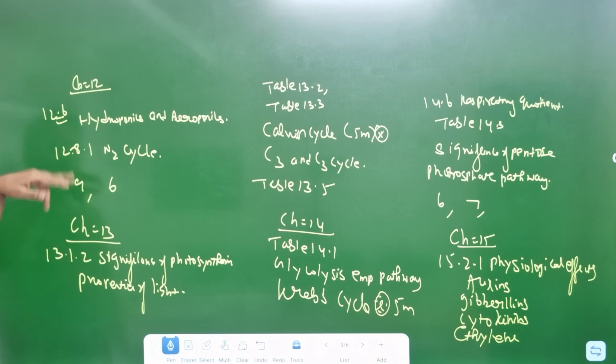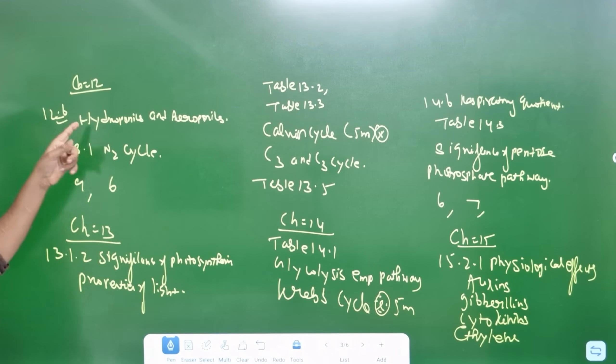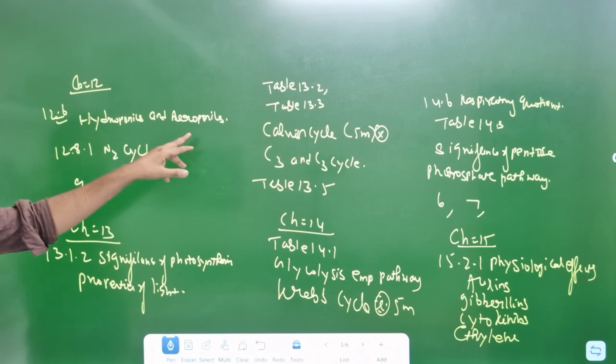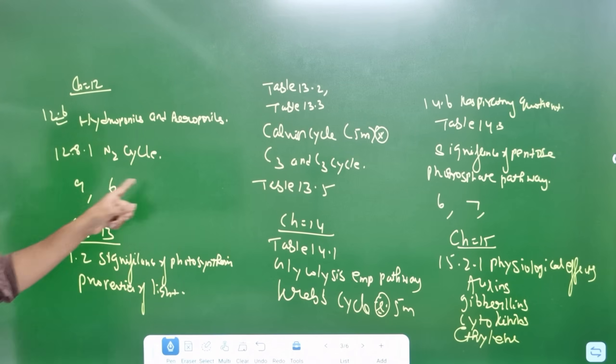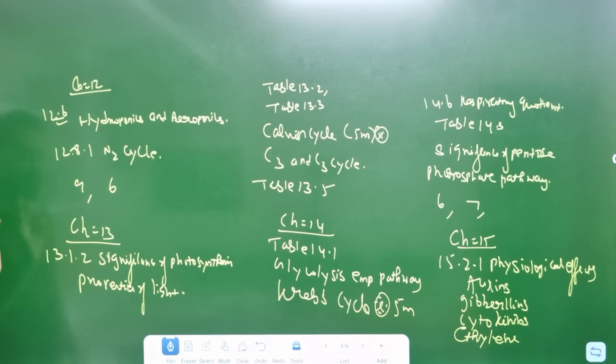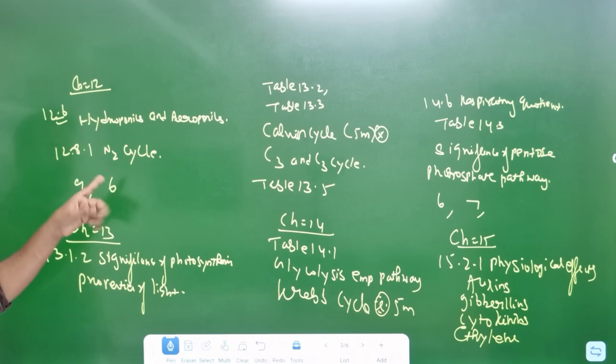Chapter 12 — section 12.6. Hydroponics and aeroponics — difference — 5 marks. N2 — 5 marks.